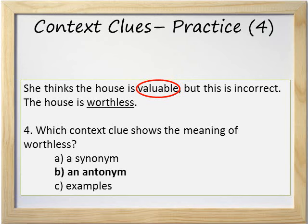Now it's possible that you thought the answer was C. Examples, because we do see one example of something worthless, which is the house. But in this case, we see that examples — item C — ends in an S. That means we would need more than one example in the context, and we only have one, which is house. So the correct answer cannot be C. It must be B.